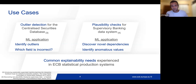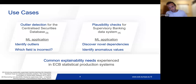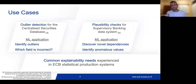The next application presented in the paper is the plausibility checks for the supervisory banking data system. In this application, the goal is to discover novel dependencies for banking supervision, and once we do that, we need to identify the anomalous values. Both use cases share some common explainable AI needs that we will now present.